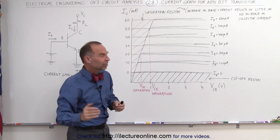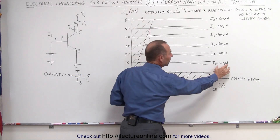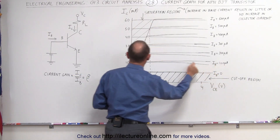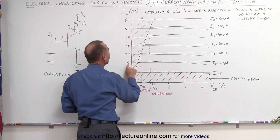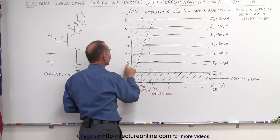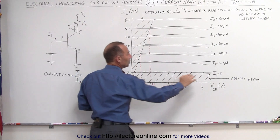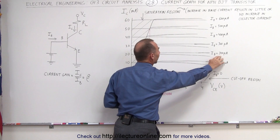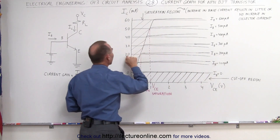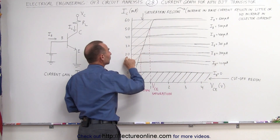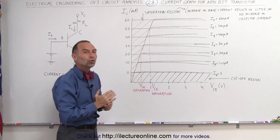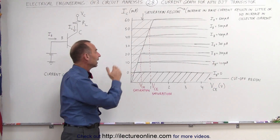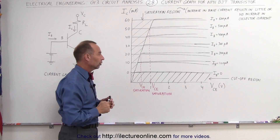When you apply a base current of 100 microamps, you get roughly a current of 10 milliamps at the collector. When you increase the base current to 200 microamps, we now have 20 milliamps. So you can see there's about a 100 to 1 gain between the base current and the collector current.